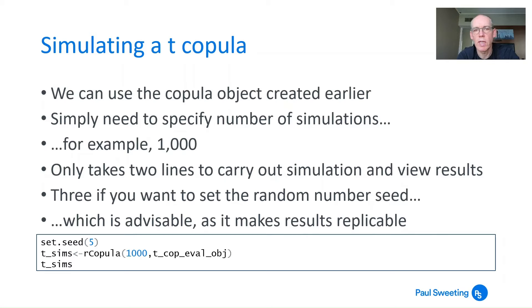We can also easily create simulations of t copulas. We calculated directly the probability, but you might want a number of simulations. Say we wanted a thousand simulations across all variables. It takes very little work to carry out and view the results. The other thing you might want to do is set a seed for the random number. This is a good idea because it makes results replicable. If someone's checking it, they can run the same simulation with the same seed and get the same results.